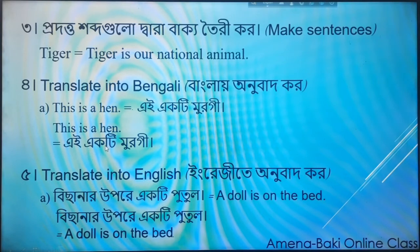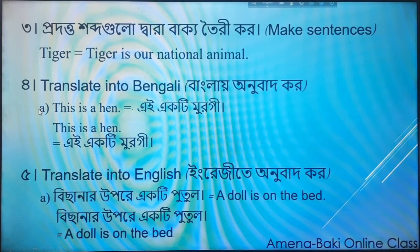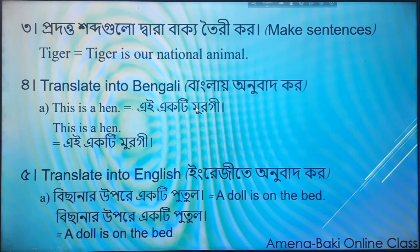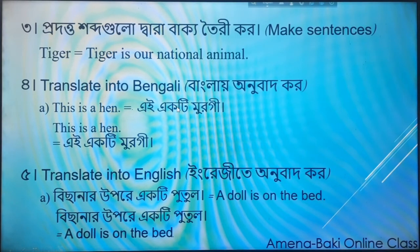Here, English is on one side and Bengali is on the other side. Let me explain a bit more clearly. When there is an English sentence, we have to write the Bengali translation alongside it. There are two columns — one for English and one for Bengali. You have to write the English sentence in English and the Bengali translation in the appropriate place.